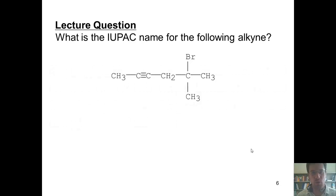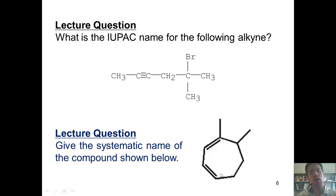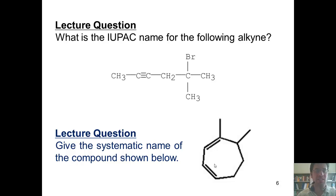This leads us to some lecture questions: what is the IUPAC name for the following alkyne, and give the systematic name of the compound shown here? The first alkyne question I'll let you do on your own. I want to focus on this second one, because you'll notice this is not an alkyne — it's actually a compound that has two alkenes in it. How do we name a compound with two alkenes? We call it a diene. This is a seven-membered cyclic compound containing two alkenes — hence it is called a cycloheptadiene. I'll let you insert the numbers and substituent names on your own.